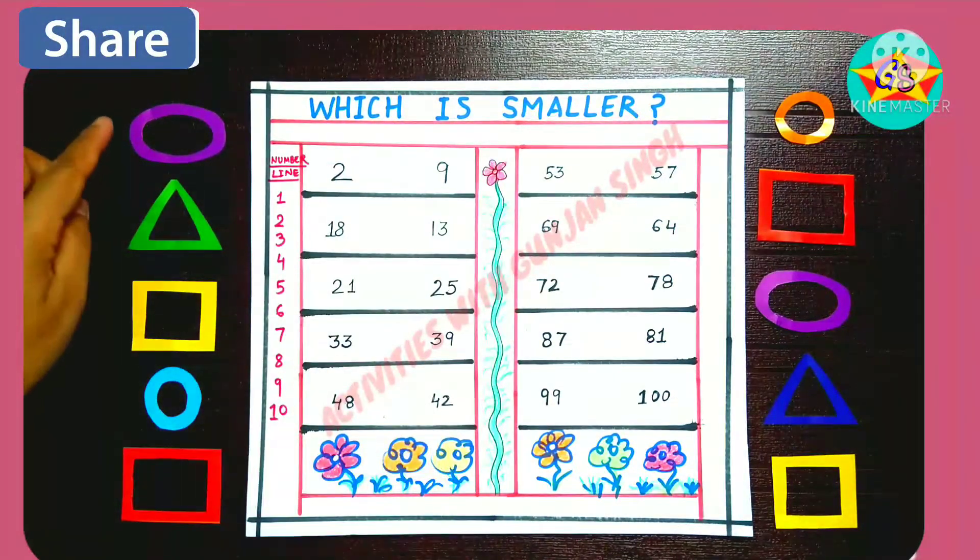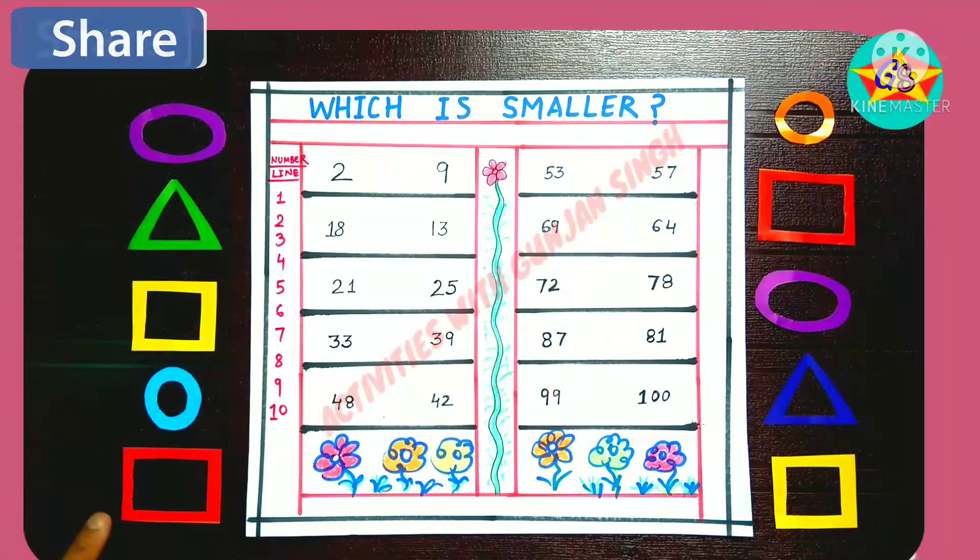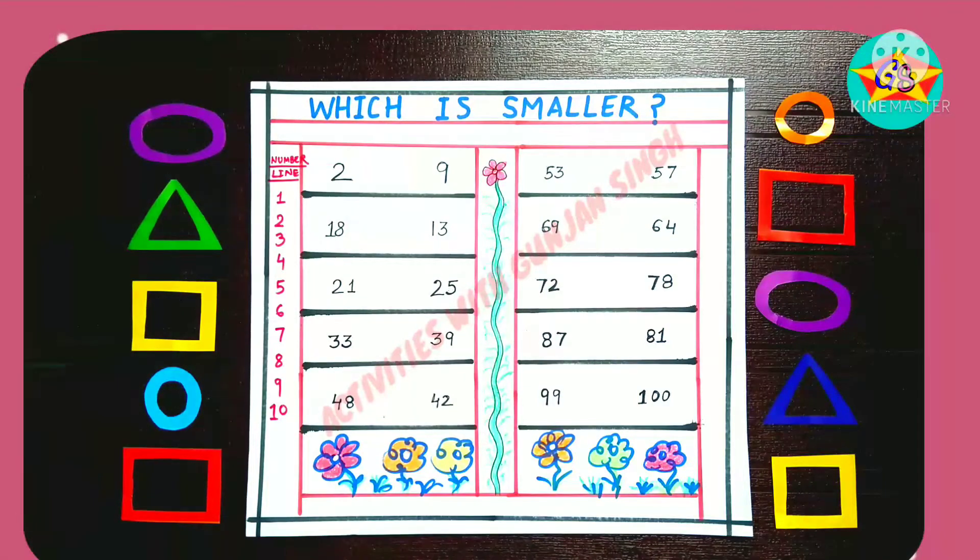So what do I have to do here? What shapes? Oval, triangle, square, circle, and rectangle. So I have cut these shapes.